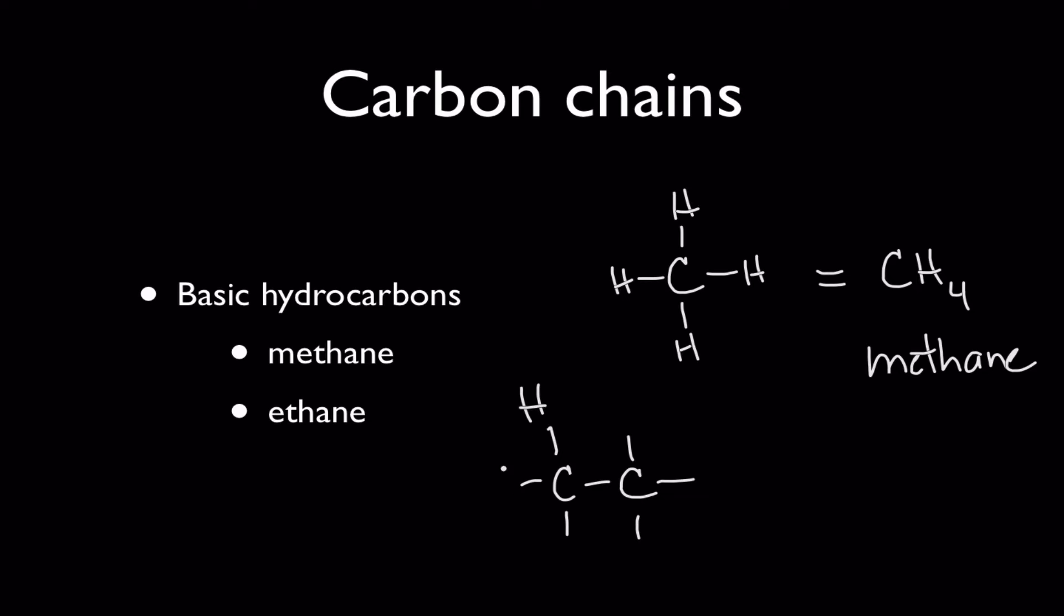And if you take two carbons, hook them to each other and you fill them up or saturate them with hydrogens, you end up with the next most simple organic molecule which is CH3CH3. You can also write it as C2H6 and this chemical is known as ethane. Both of these are flammable natural gases.